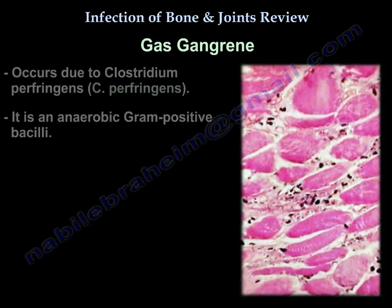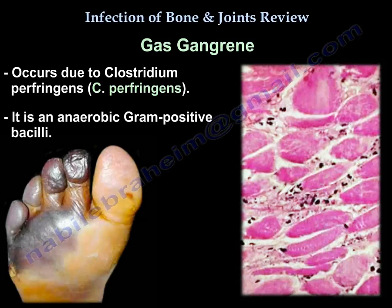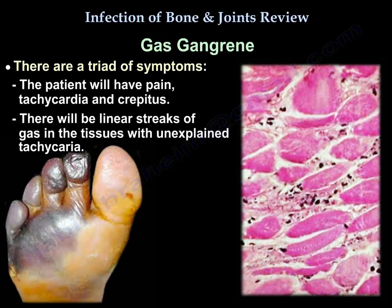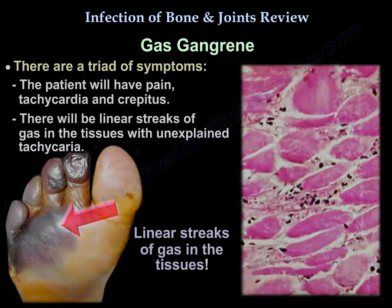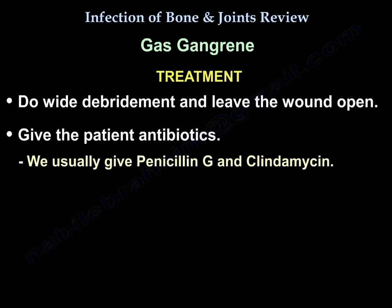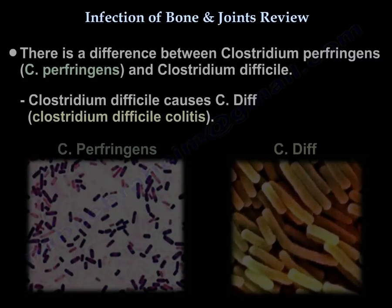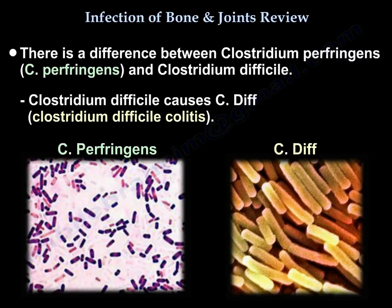Gas gangrene occurs from Clostridium perfringens, an anaerobic gram-positive bacillus. The triad of symptoms is pain, tachycardia, and crepitus. There will be linear streaks of gas in the tissue with unexplained tachycardia. Treatment is wide debridement, leaving the wound open, plus antibiotics — usually penicillin G and clindamycin. There is a difference between Clostridium perfringens and Clostridium difficile: C. diff is caused by antibiotics, especially clindamycin.